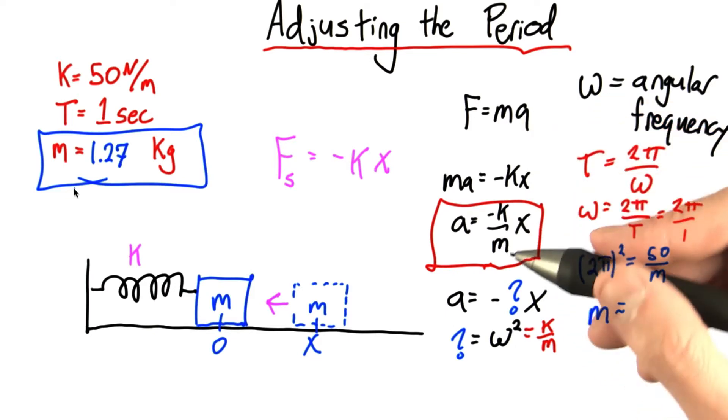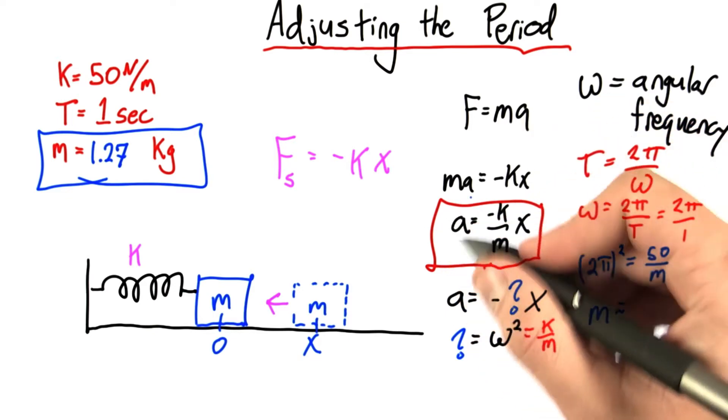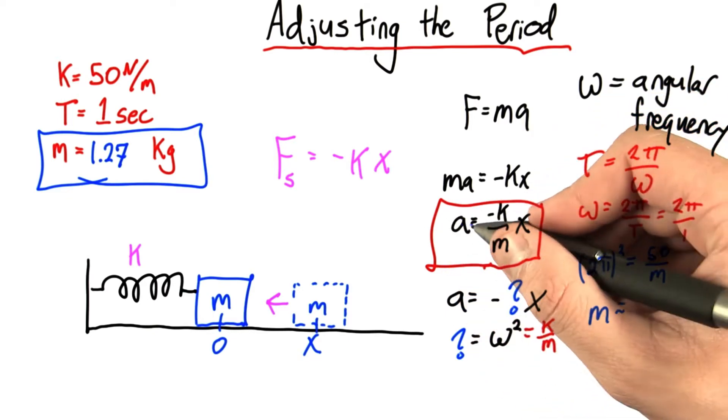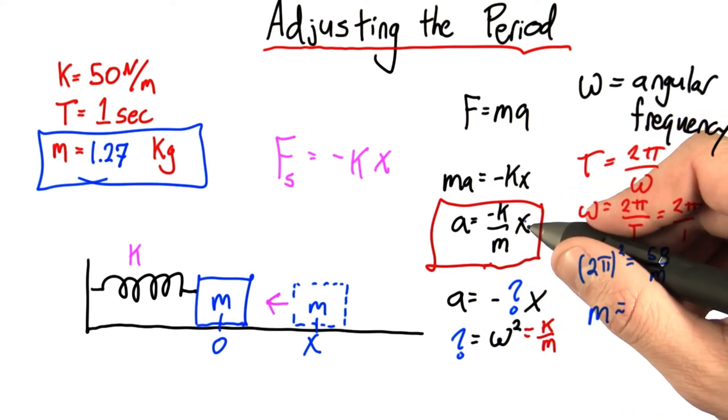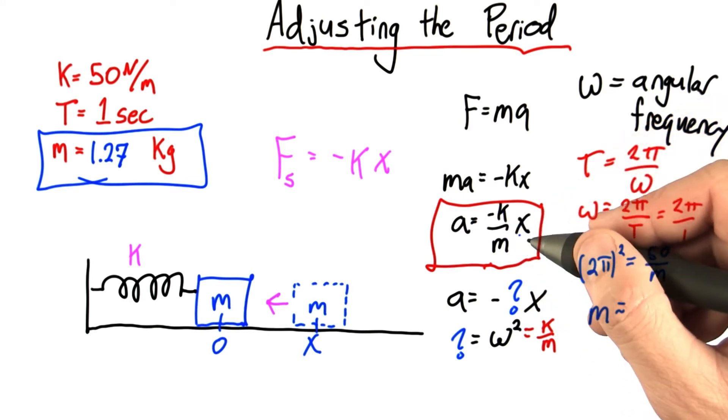So okay, this was a little tricky. The takeaway I want you to remember is that anytime you can write your force like this, acceleration equals negative something times x, you're going to get simple harmonic motion.